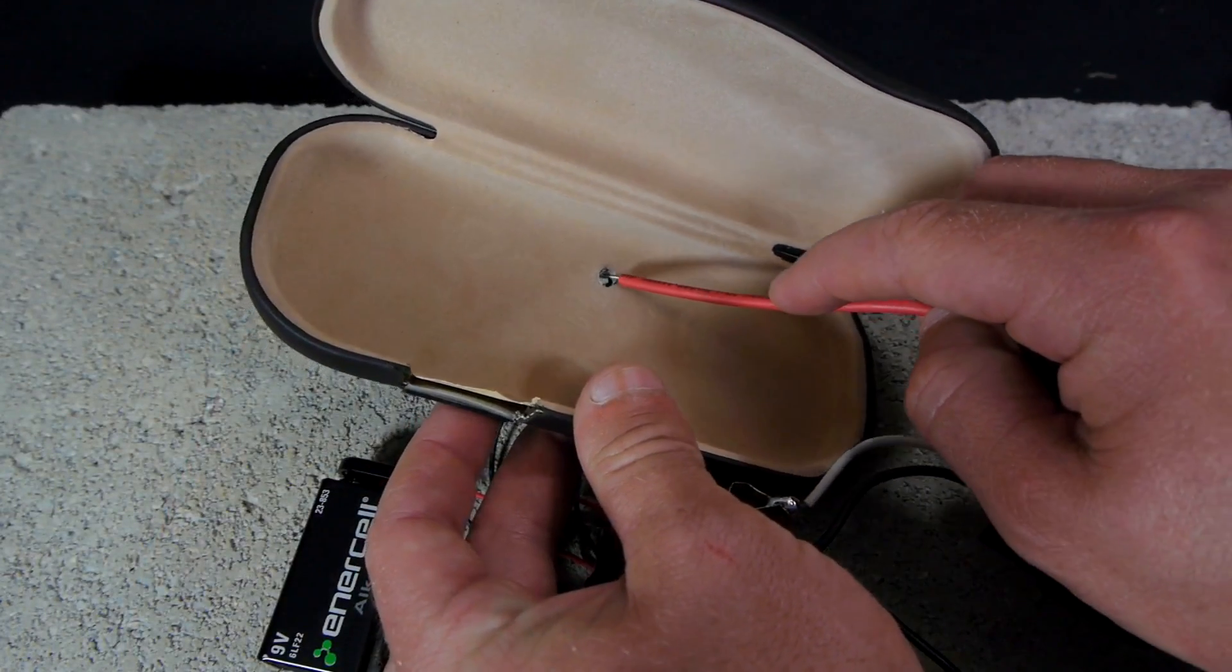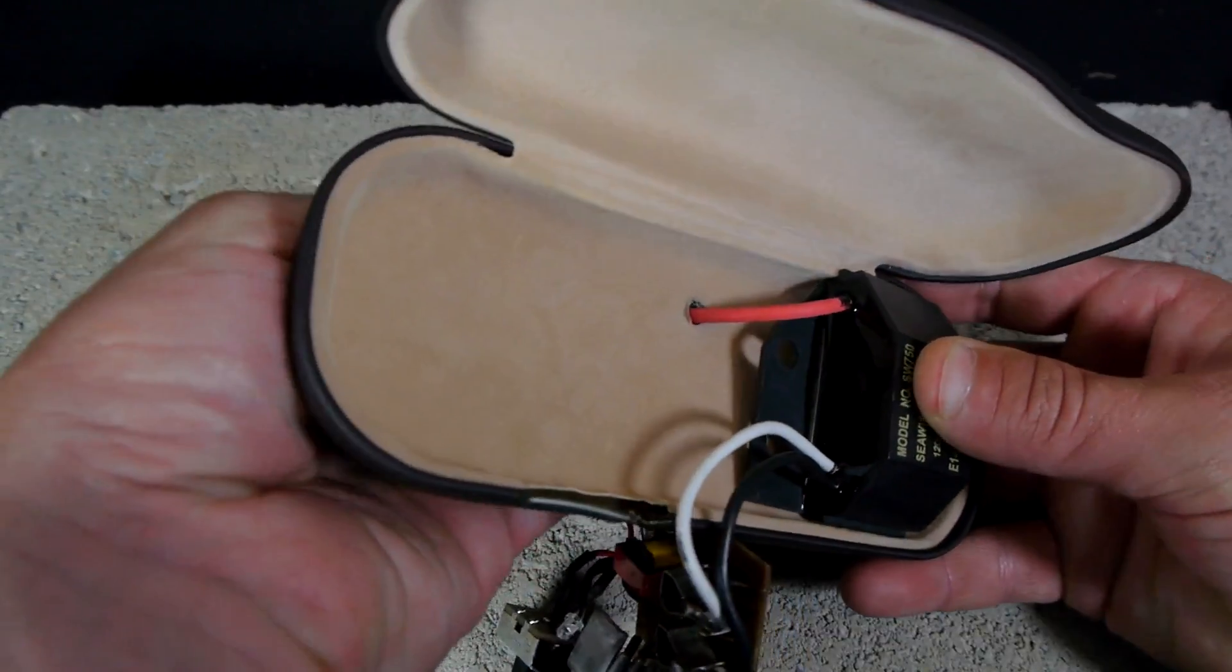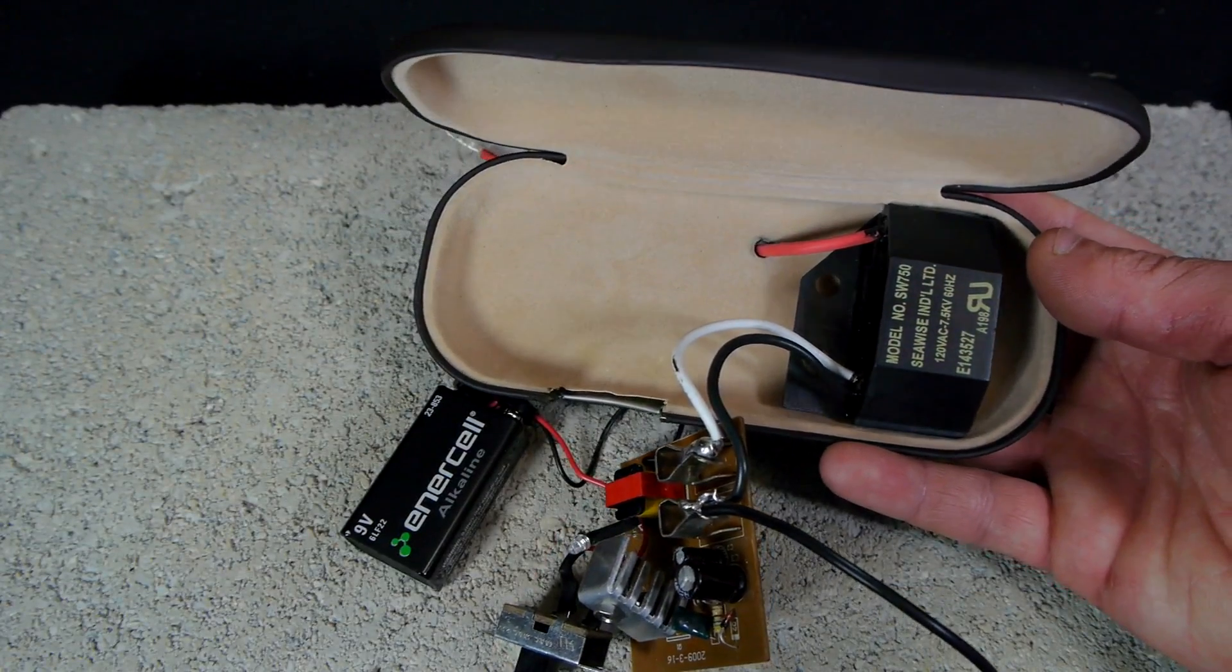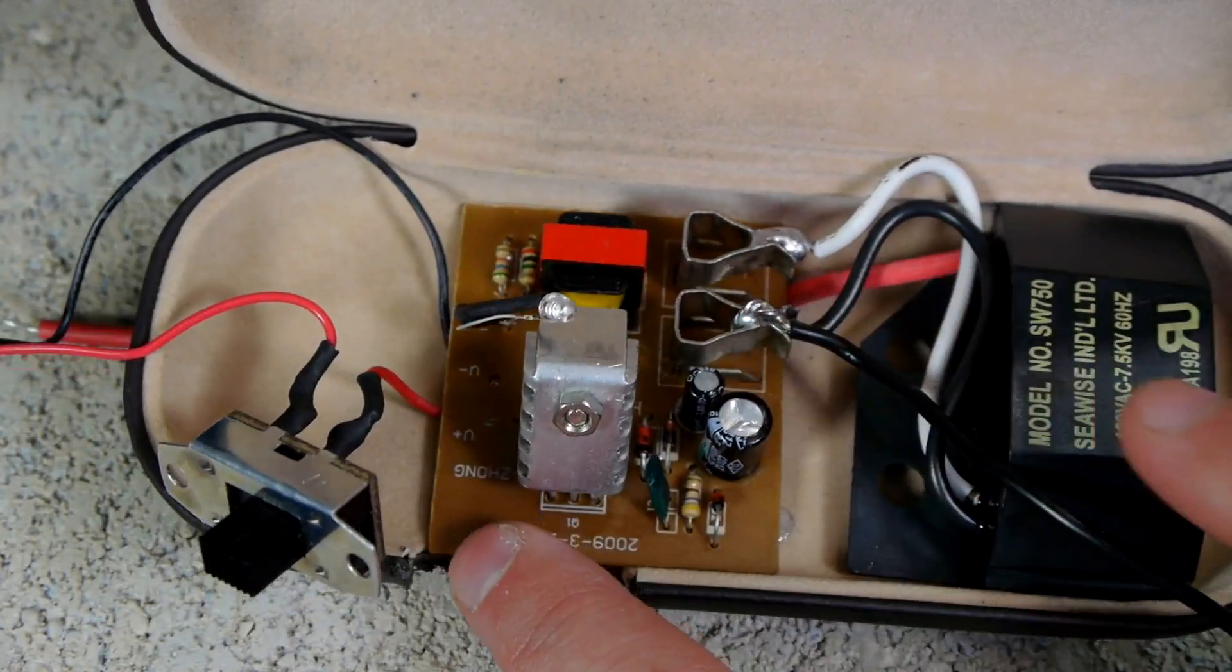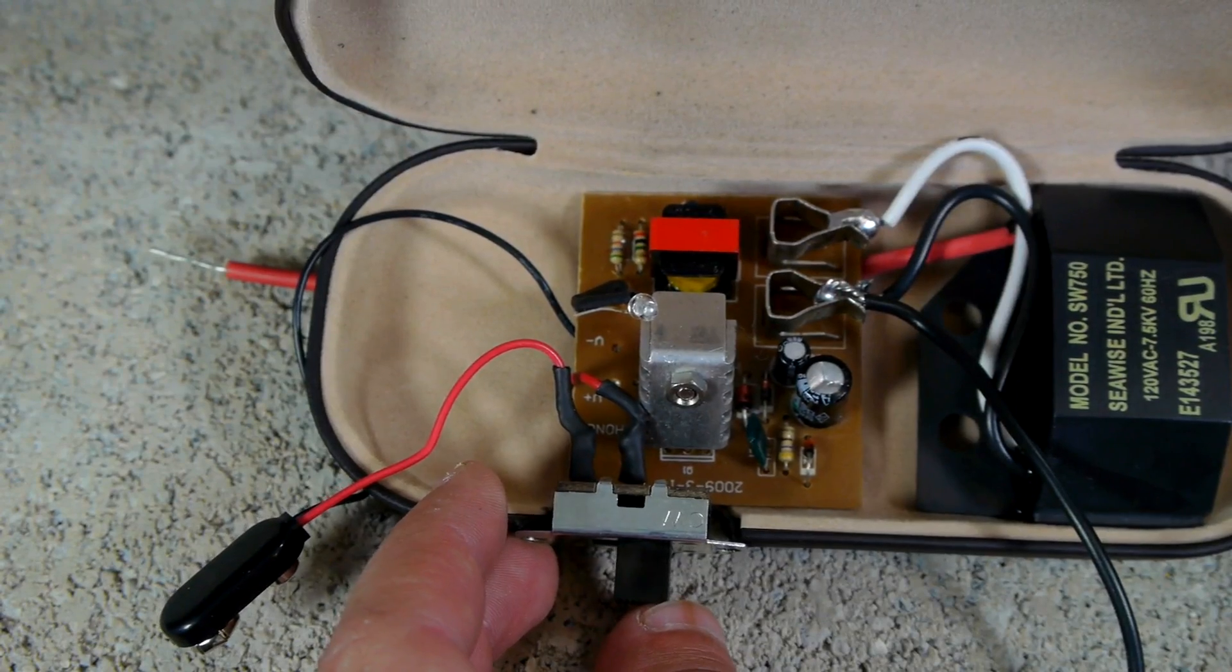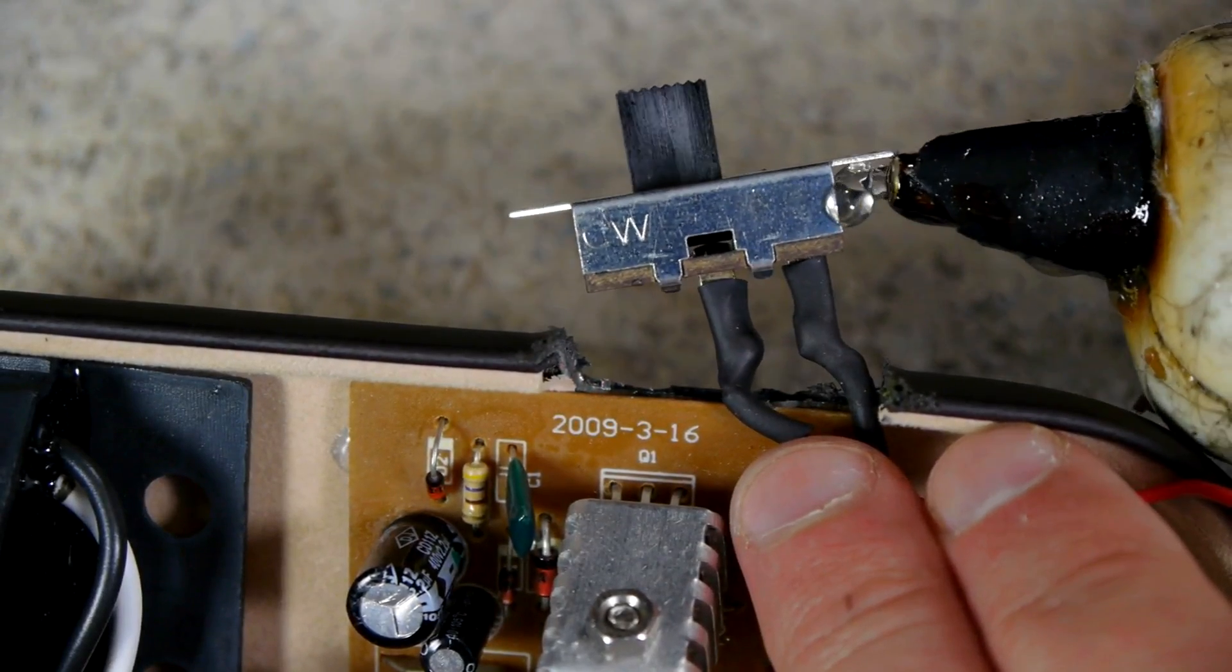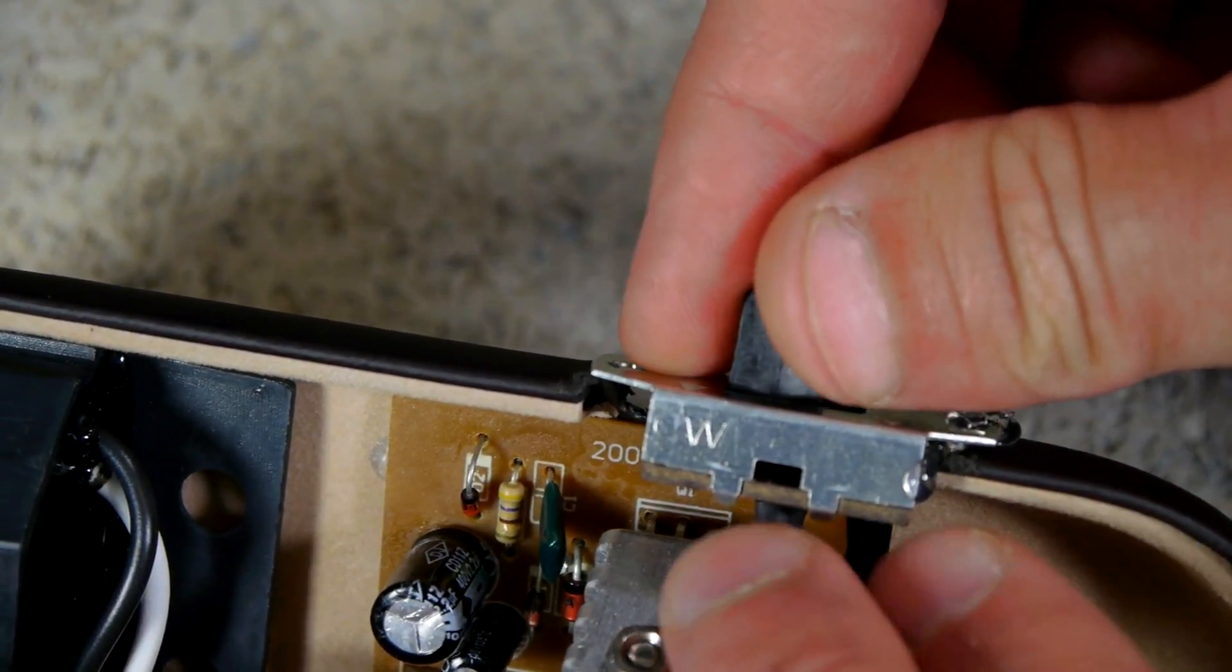We can now start fitting the electronics into their permanent positions, starting with the electron generator by pushing its wire through the hole we previously drilled. Right in front of that we insert the power converter, which is hot glued into place. The switch is then inserted into the section we prepared for it in the side. It can be hot glued into place, but you must be very careful not to get any glue into the internal components or it may not function properly.